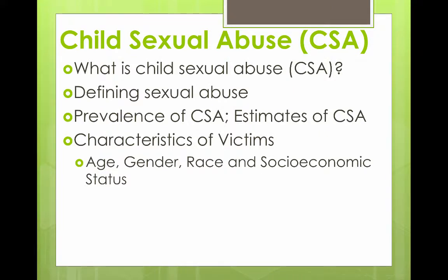When it comes to characteristics of victims, the age of CSA victims ranges from infancy to 18 years old, but most cases typically occur around ages 12 to 14. Regarding gender, females are more likely to be victims than males, though males are also victims. There is no significant difference across racial or ethnic groups — CSA is spread across all racial groups.